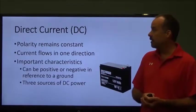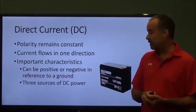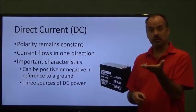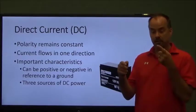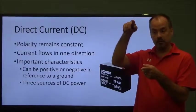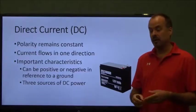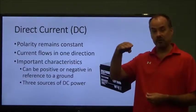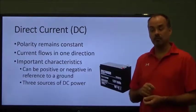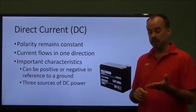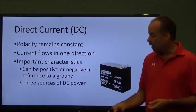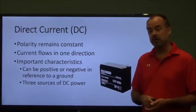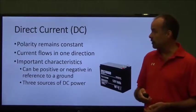Important characteristics of DC voltage: it can be positive or negative in reference to ground. If I have a ground in a circuit and I test it with a voltmeter, if I put my black lead on the ground and my red lead on the voltage, it would read positive. Or, there's another situation where a power supply could be hooked up in a manner where the ground is actually positive, and then the other side of that circuit would be negative, meaning it would have a positive ground. And finally, there are three sources of DC power or three ways to generate DC power.